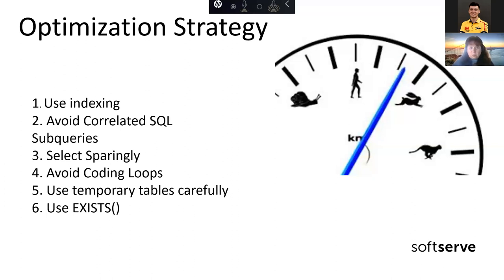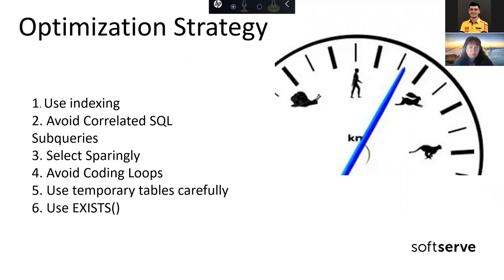I would like to say a few words about temporary tables and about using the EXISTS statement. As for temporary tables, sometimes it's very useful to use them instead of large native tables which have a lot of fields and properties. You can create temporary tables to reduce query complexity because you have a lower number of rows. You can improve database performance by transferring your data to a temporary table and then joining to that temporary table instead of the original table.